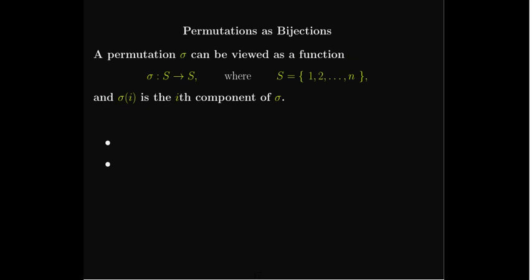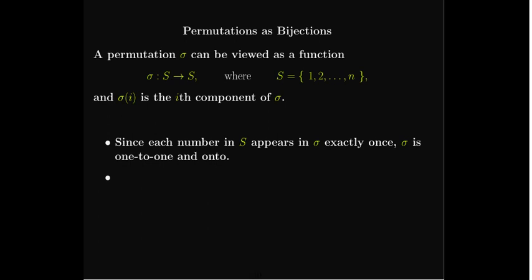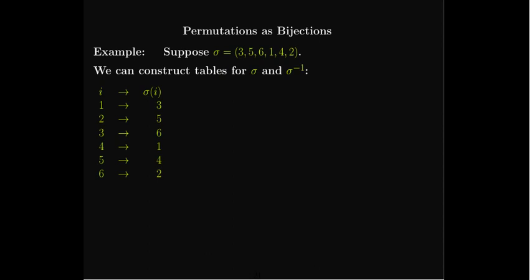You can think of a permutation as a function whose domain and range are both the set S — it is an onto function. We write σ(i), where i is the input and σ(i) is the output. Since each number in S appears in the permutation exactly once, it is both one-to-one and onto, which means it is invertible. So there exists an inverse σ-inverse, which is also a permutation.